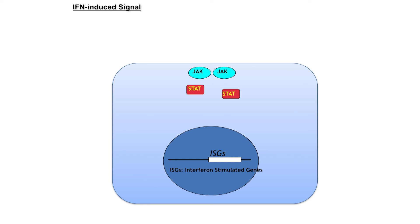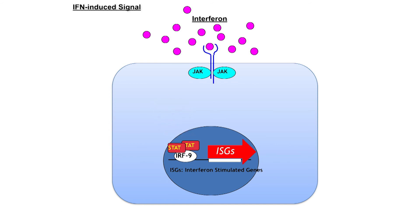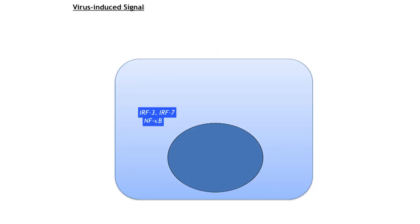I would like to explain how interferon delivers its antiviral activity. An interferon receptor is expressed on the surface of host cells. When cells are exposed to interferon, it activates signal transducer and activator of transcription, STAT, through interaction with its receptor. Subsequently, the activated STAT forms a complex with IRF9 and translocates into the nucleus, where a group of genes termed interferon-stimulated genes, or ISGs, are activated. The ISGs encode proteins with viral replication inhibitory activities. Therefore, cells develop an antiviral state in which viral replication is restrained.